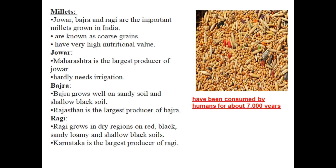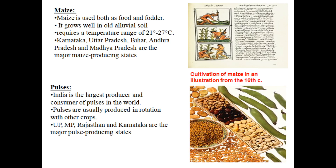Now we come to maize. Maize is used as both food and fodder. It grows well in alluvial soil and requires a temperature range of 21 to 27 degrees Celsius. Karnataka, Uttar Pradesh, Bihar, Andhra Pradesh, and Madhya Pradesh are the major maize producing states.